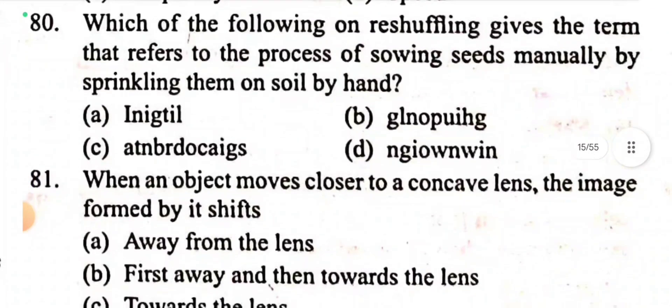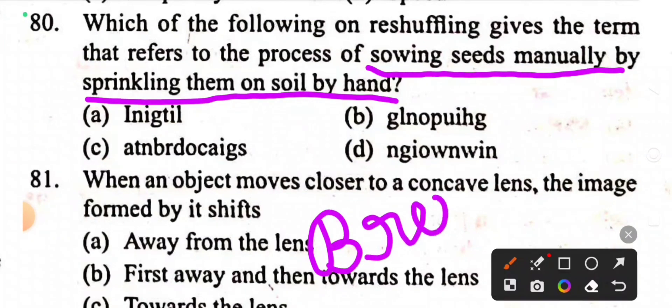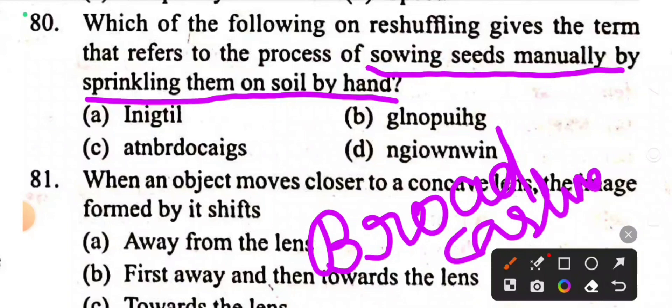Question 80: Which of the following on reshuffling gives the term that refers to the process of sowing seeds manually by sprinkling them on soil by hand? The answer is broadcasting, and this option consists of broadcasting.